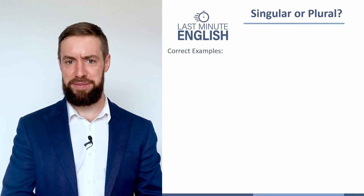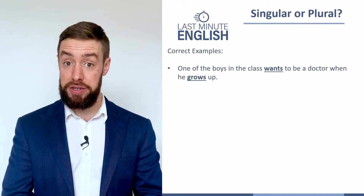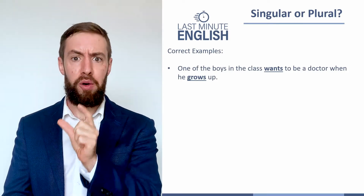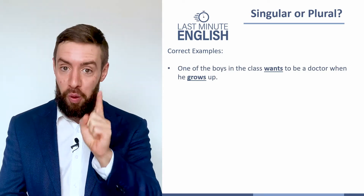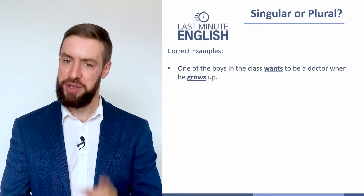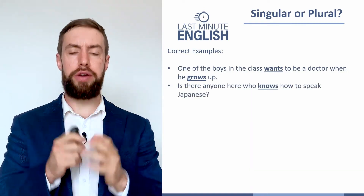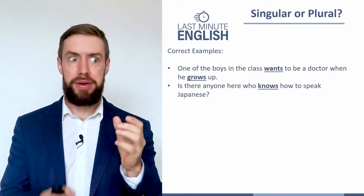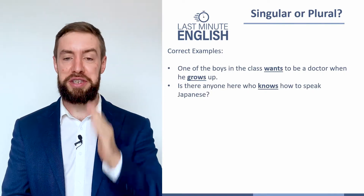Now let's take a look at a few correct examples. 'One of the boys in the class wants to be a doctor when he grows up.' You might think 'the boys' is more than one, but we're only talking about one of them, so it's 'one of them wants' and 'one of them grows up' — we add the 's.' Next: 'Is there anyone here who knows how to speak Japanese?' Anyone might refer to lots of people, but we're looking for one person, so it's third person singular.